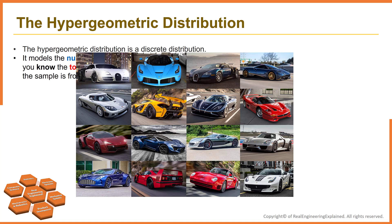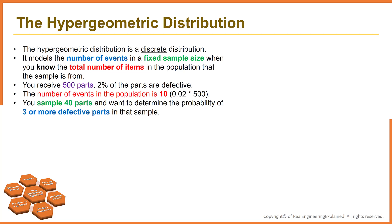For the first trial, 5 out of 16 cars are turbo. Next time, if the turbo car is not selected, 5 out of 15 cars will be turbo. It's more probable now, isn't it?